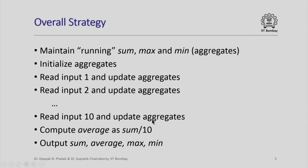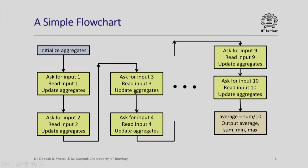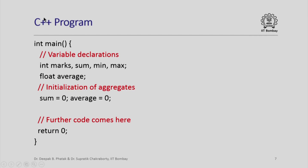Here is what a simple flowchart for this problem might look like. We initialize the aggregates, and then for each student we ask for the input — their quiz-one marks — read the input, and update the aggregates. We do the same thing for the second student, then the third student, all the way up to the tenth student. At the end we compute the average and print out the average, sum, min, and max.